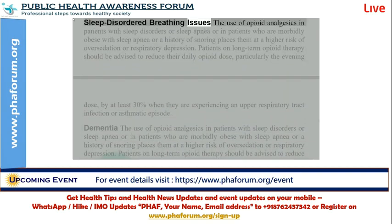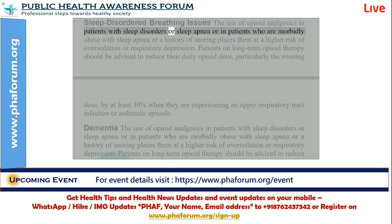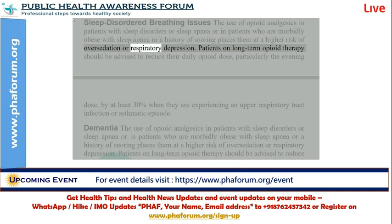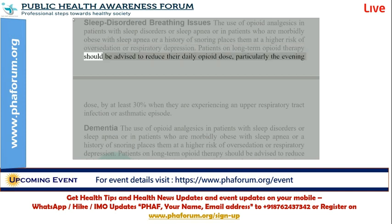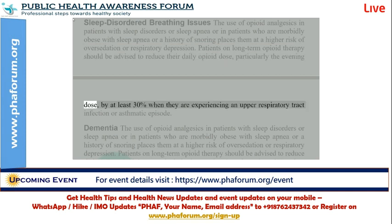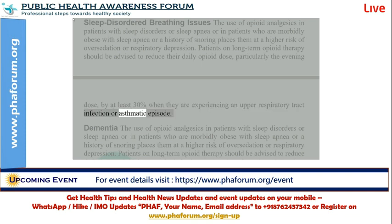Sleep disordered breathing: the use of opioid analgesics in patients with sleep disorders or sleep apnea, or in patients who are morbidly obese with sleep apnea or a history of snoring, places them at higher risk of over-sedation or respiratory depression. Patients on long-term opioid therapy should be advised to reduce their daily opioid dose, particularly the evening dose, by at least 30% when they are experiencing an upper respiratory tract infection or asthmatic episode.